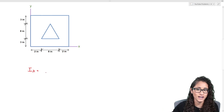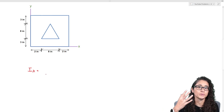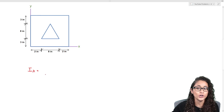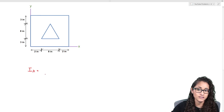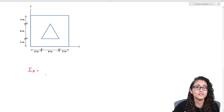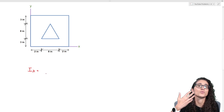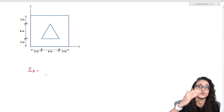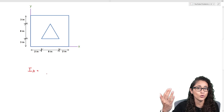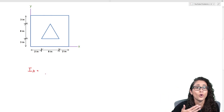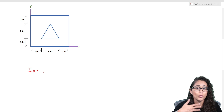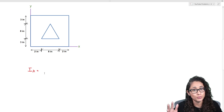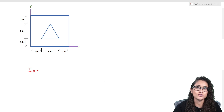To find the moment of inertia about the x-axis, let's first start with the rectangle. As mentioned, since the rectangle is already on the x-axis, we're not going to use the parallel axis theorem because dy will just be zero — there is no distance to reference the rectangle to the x-axis. To find the moment of inertia for the rectangle, let's go to the reference manual and grab the equation.